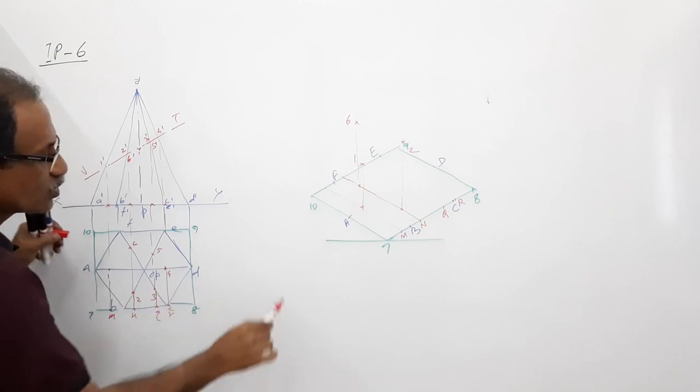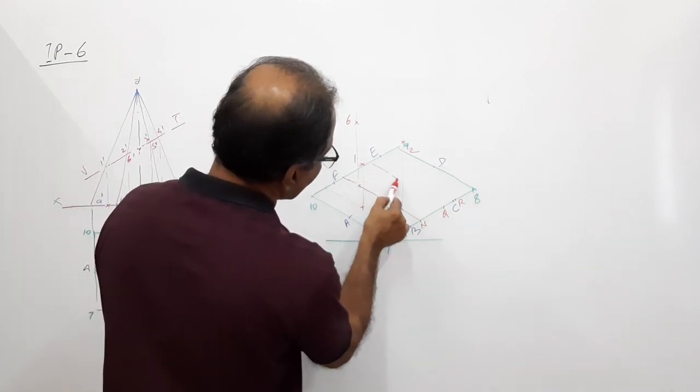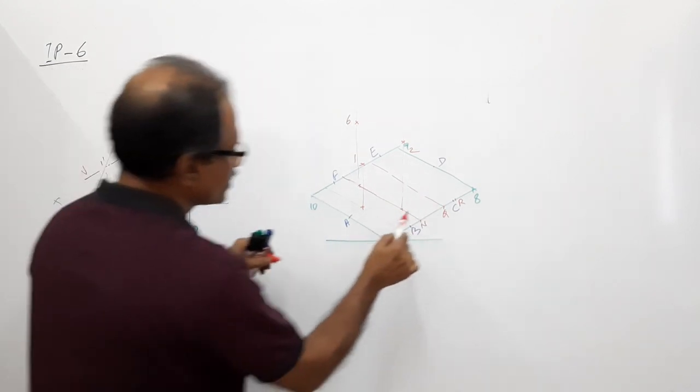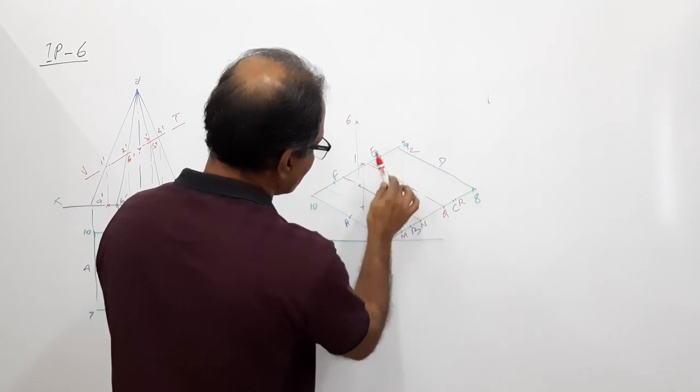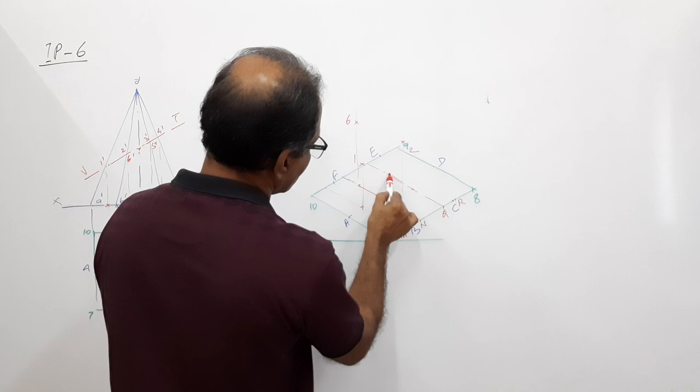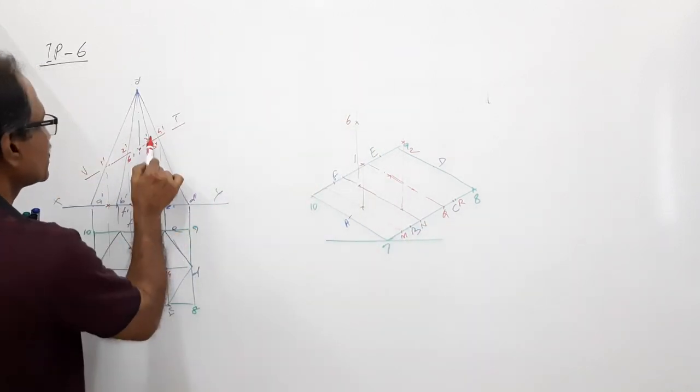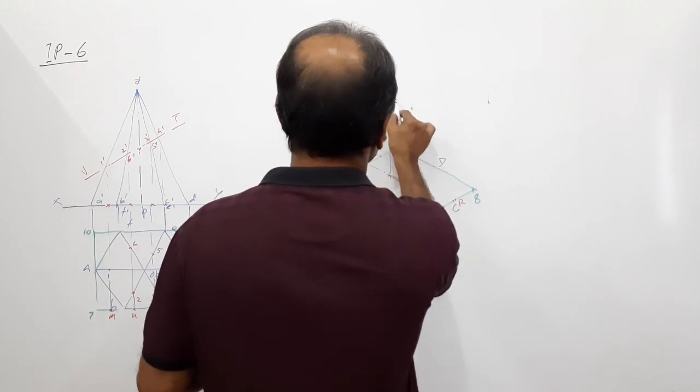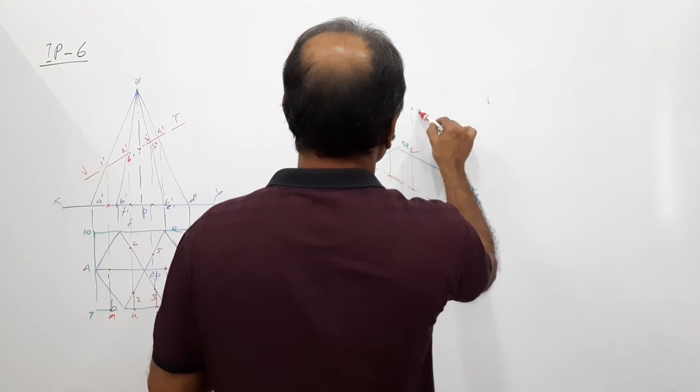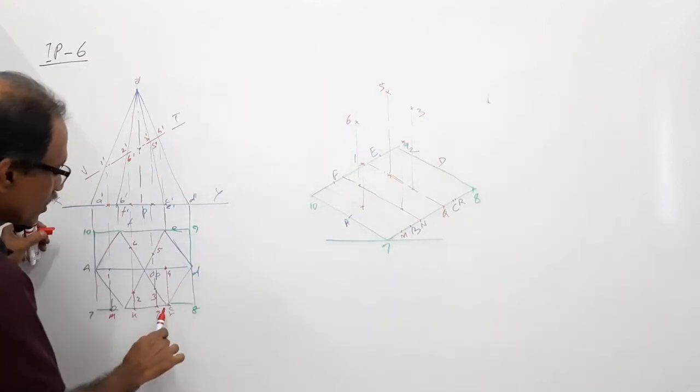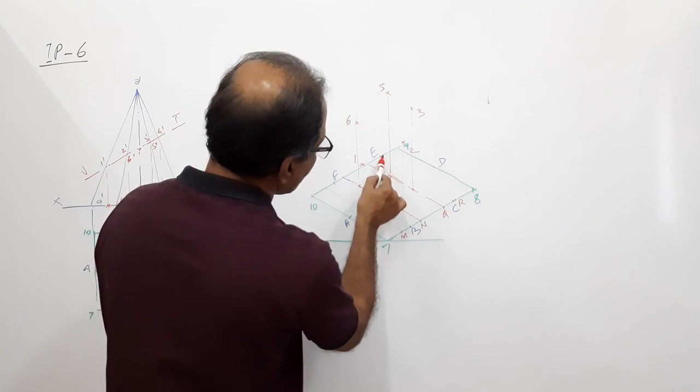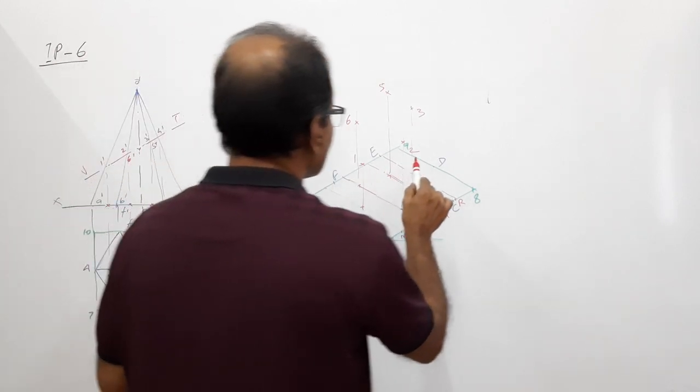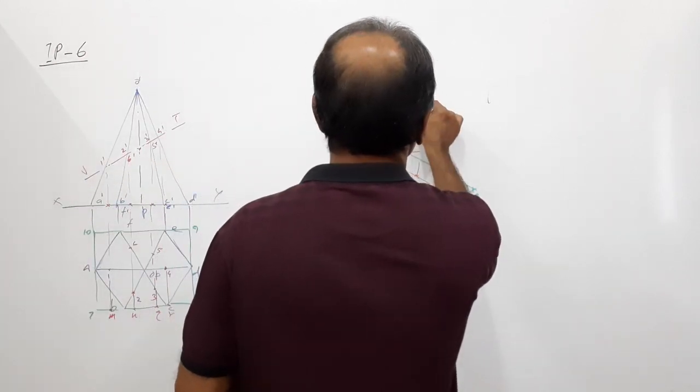Look, from Q draw this line. Go up this much distance, come back that much distance. Go up how much? This much. What is this? 3 and 5. Go inside. Go up what distance? This distance. You get 4.